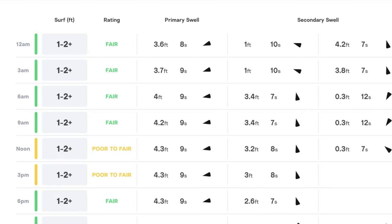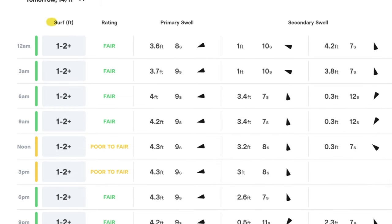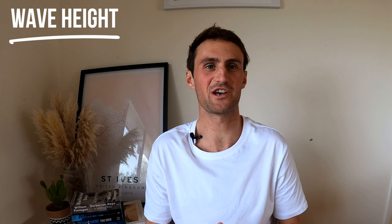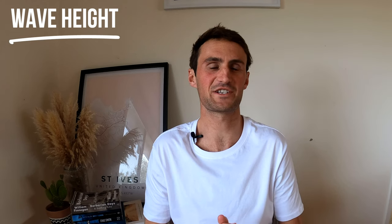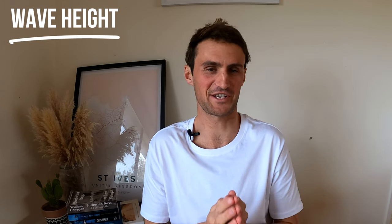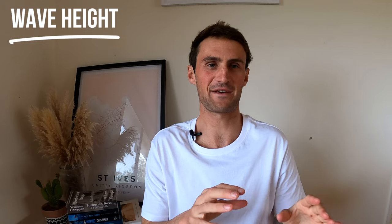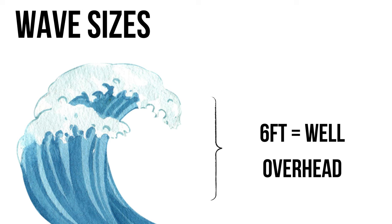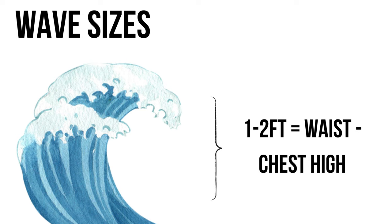In the first column we've got the surf — this is Surfline's predicted surf height average, so it might say one to two foot or two to three foot. There's a weird thing in surfing regarding surf heights: six foot doesn't actually mean six foot. Generally speaking, three foot translates to about head-high waves, and six foot translates to double overhead plus waves.